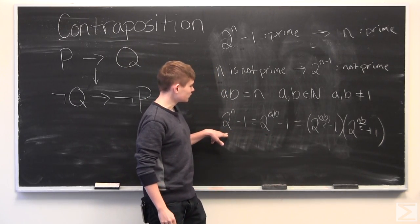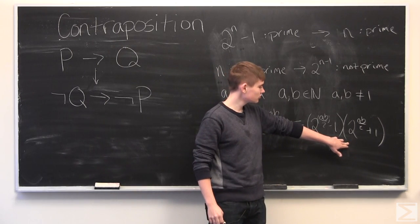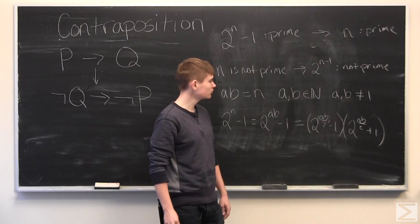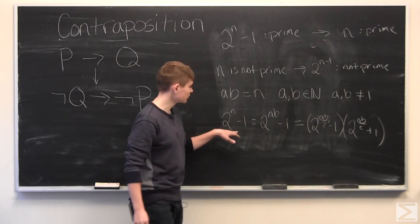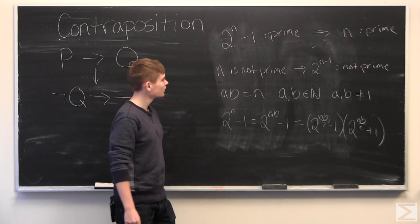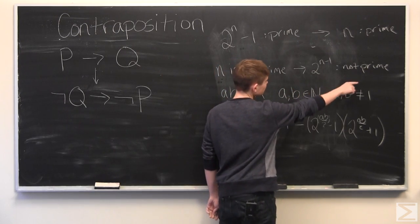This means that 2 to the n minus 1 can be factored into two numbers, two integers, which are not 1, which means that 2 to the n minus 1 is composite, which means that it is not prime. Therefore we've shown that if n is not prime, 2 to the n minus 1 is not prime.